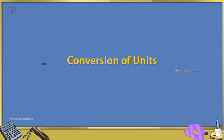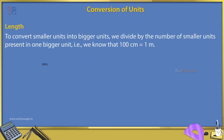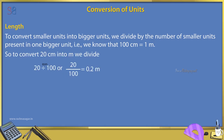Conversion of units — Length: To convert smaller units into bigger units, we divide by the number of smaller units present in one bigger unit. We know 100 cm = 1 meter. So to convert 20 cm into meters: 20 ÷ 100 = 0.2 meter. So 20 cm = 0.2 m. We know 1000 m = 1 km, so 40 m = 40/1000 km = 0.04 km.